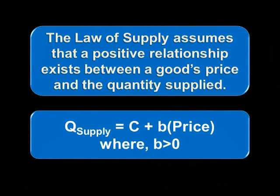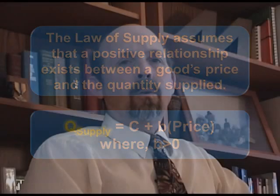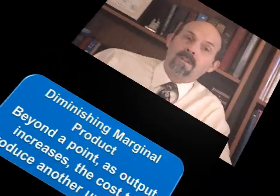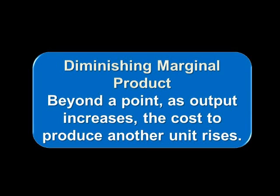Using the same ceteris paribus assumption, the law of supply assumes that a positive relationship exists between a good's price and the quantity supplied — as the price goes up, more will be supplied. All businesses face short-run constraints that limit their ability to increase output, meaning that producing greater quantities beyond a point leads to rising per unit costs. Since businesses only exist to earn a profit, they will only increase production if the price goes up enough to compensate for the rising costs. This is diminishing marginal product — as production increases, further increases become more expensive.